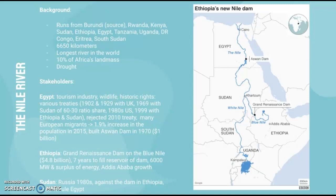Sudan also plays a role in this conflict. They have actually been against the Grand Renaissance Dam, siding with Egypt in that sense. However, Sudan historically claims to have had rule over Egypt, which is one reason they feel they may have entitlement to the Nile River.